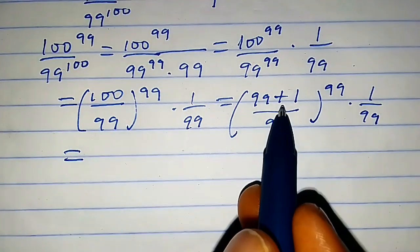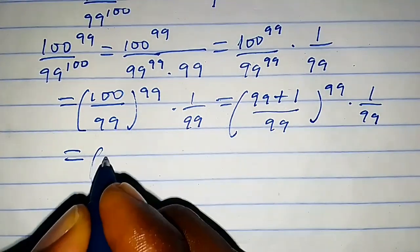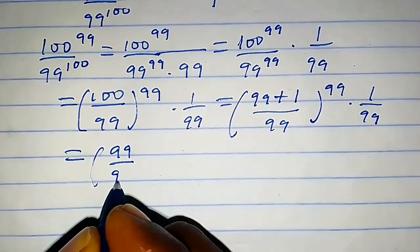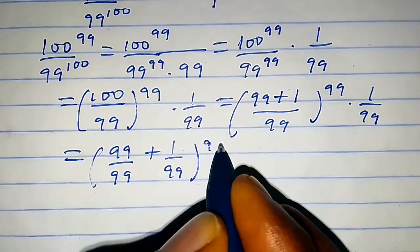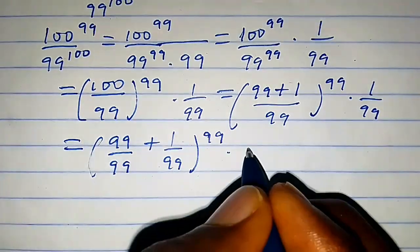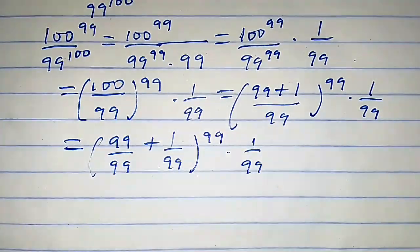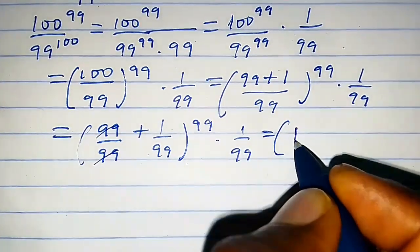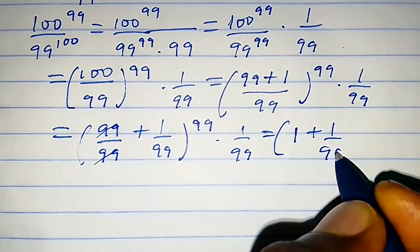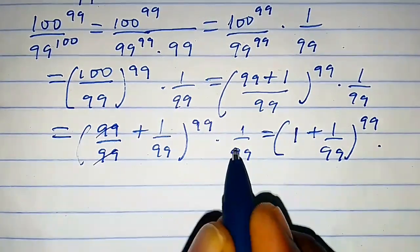This equals (99/99 + 1/99)^99 × (1/99), which simplifies to (1 + 1/99)^99 × (1/99).